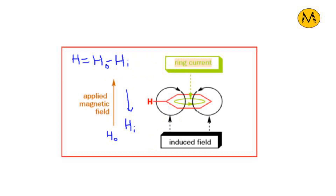In the last slide we saw that electrons delocalize, therefore a ring current is produced, and therefore a magnetic field is produced. Now we are applying externally a magnetic field across the molecule — a magnetic field applied in the upward direction.